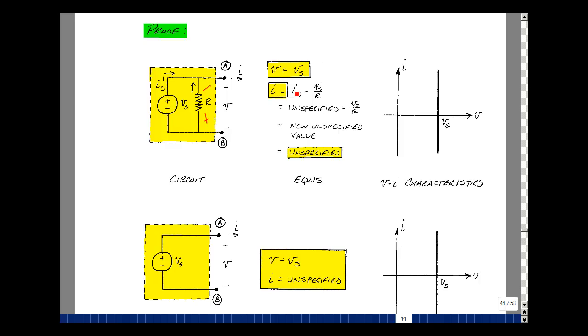I sub S is the current of a voltage source, and that's actually arbitrary or unspecified. It doesn't have a fixed relationship like a resistor does. So if you take an arbitrary number and subtract a number from it, you just get another arbitrary number. And so the current in this relationship then is really unspecified or arbitrary.